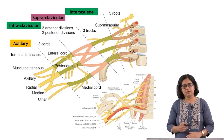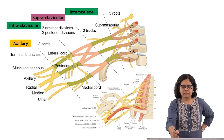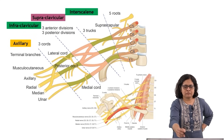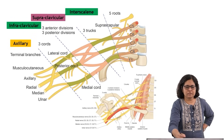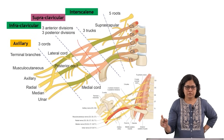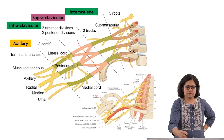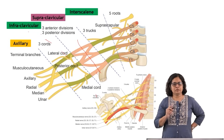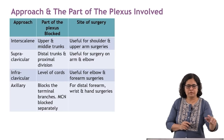Superimposing the diagram on the anatomical picture: the interscalene block covers and blocks the three trunks. The supraclavicular block is at the level of divisions — three anterior and three posterior. The infraclavicular block is at the level of cords, and the axillary block is at the level of individual nerves. This is very important when deciding which block and approach to choose.